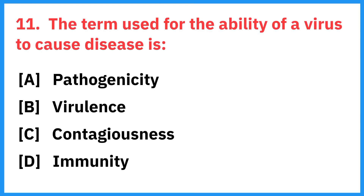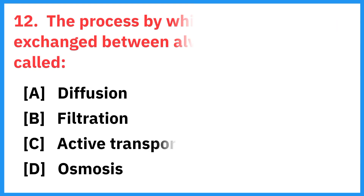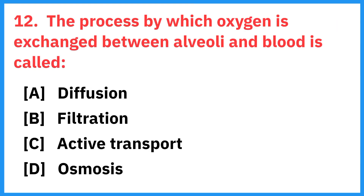The term used for the ability of a virus to cause disease is? Correct answer is virulence. The process by which oxygen is exchanged between the alveoli and blood is called? Right answer is diffusion.